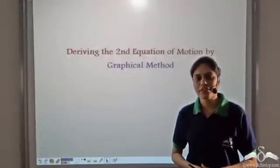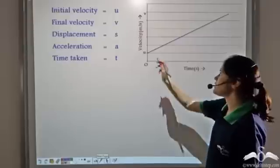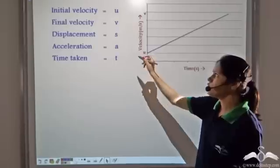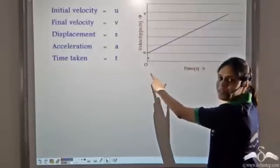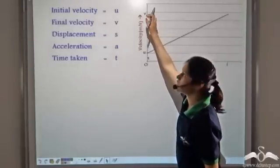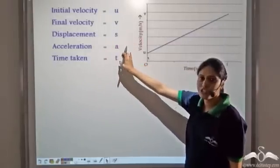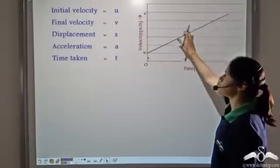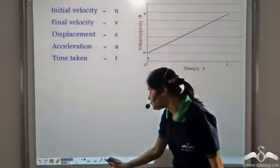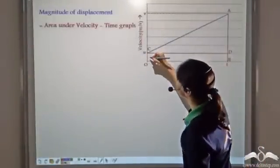Now let us derive the second equation of motion using graphs. We take a v-t graph, that is a velocity-time graph. Velocity at time t equal to zero is u, so initial velocity is u. Total time taken is t. Velocity at time t is v, so final velocity is v. We represent displacement as s and acceleration as a. Note that this is a velocity-time graph for constant acceleration because it is a straight line. The magnitude of displacement is equal to the area under the velocity-time graph.